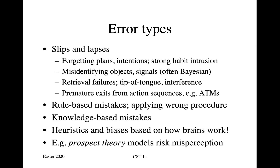There are also knowledge-based mistakes, where people simply remember the wrong facts or apply them in the wrong context. Then there are heuristics and biases, based on how our brains work. Although the higher parts of our brains operate in terms of logic, the more primitive parts operate in a much more associative and visceral way. These primitive parts are responsible for digging up memories, and these heuristics and biases are very important for understanding behavior around risk. For example, when estimating the risk of something, we use the availability heuristic — you think of the most vivid example of the thing you're trying to assess and apply that as a yardstick.